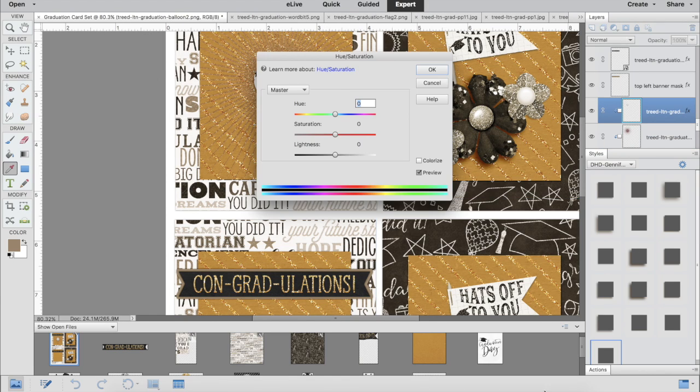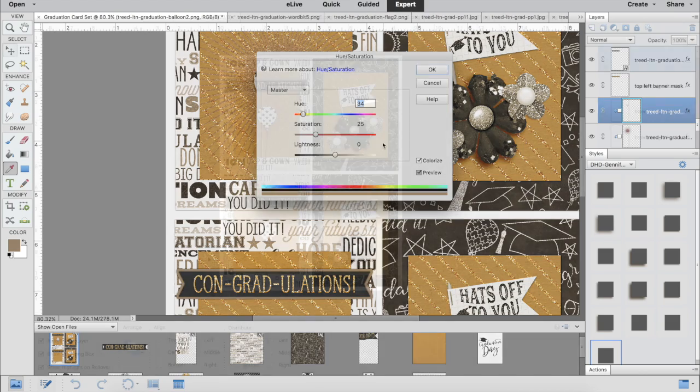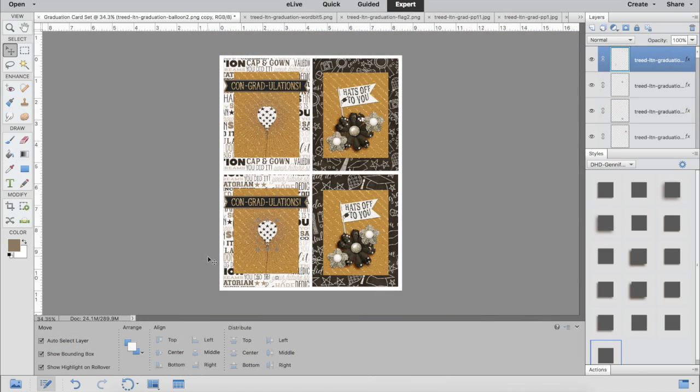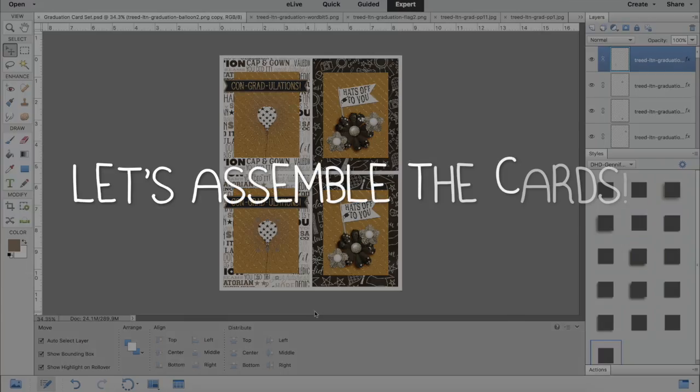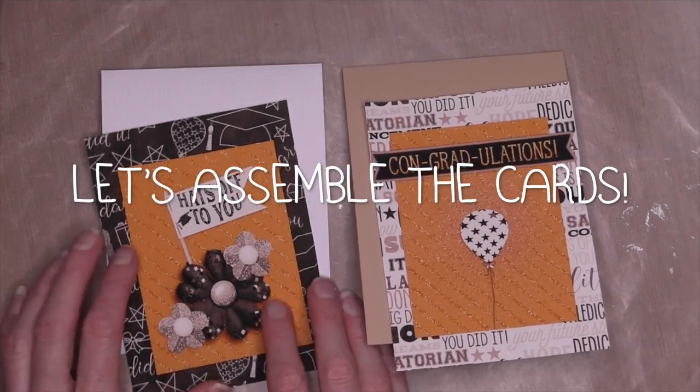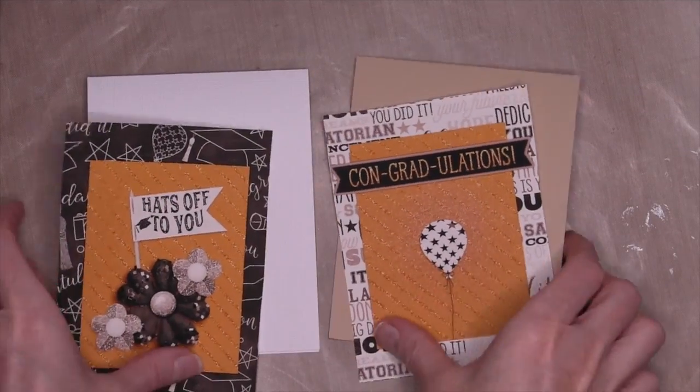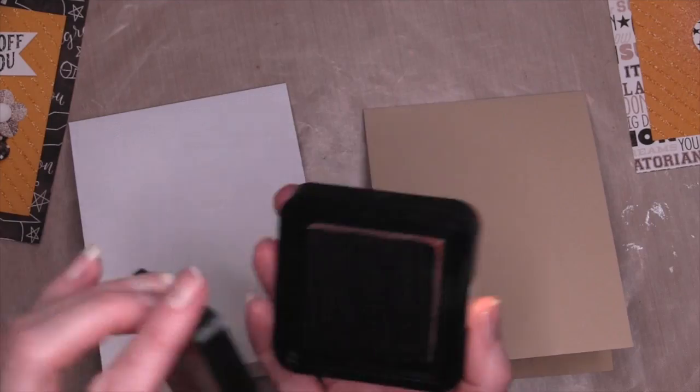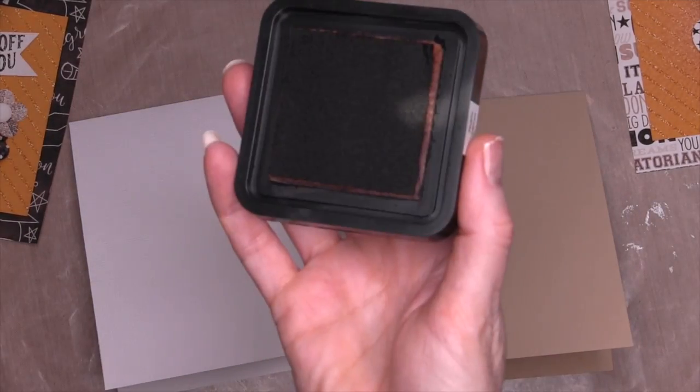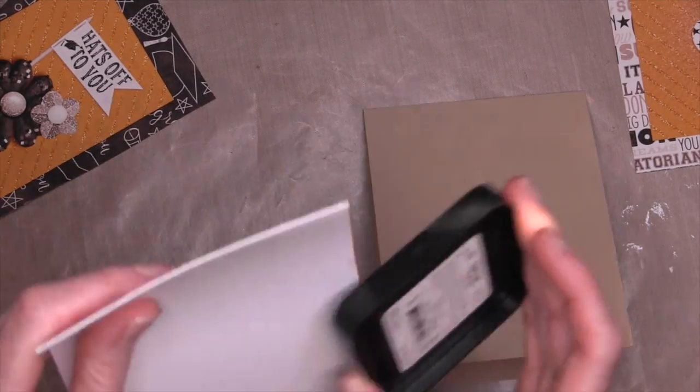Now it looks more like a see-through burst behind the balloon that adds a nice pop but doesn't compete with anything. Now we're going to print the card fronts using my printer. I've cut them out and I'm going to put them on my two card bases.